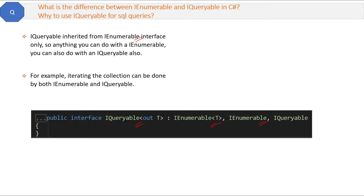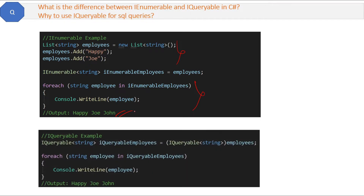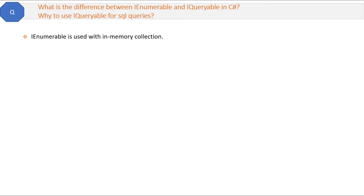In addition to everything IEnumerable can do, IQueryable can perform some extra tasks related to SQL queries. In the code here, we have a list which we are iterating using IEnumerable, and we can also use IQueryable to iterate the same list and get the same result. The key point is: IEnumerable is preferred with in-memory collections like arrays and lists, whereas IQueryable is better for getting results from a database.